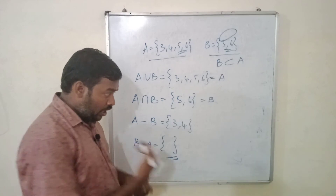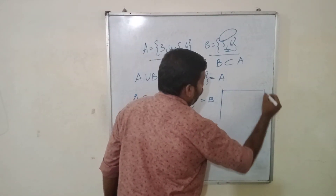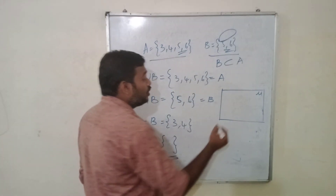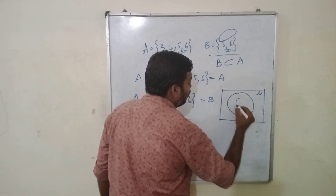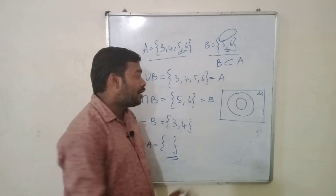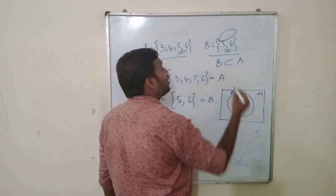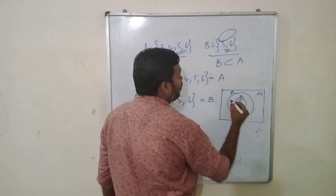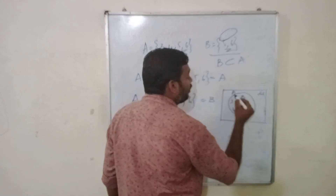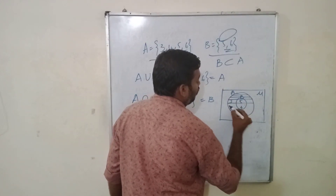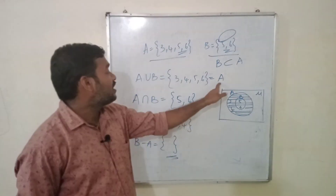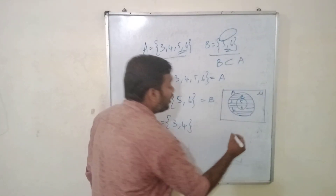Now if we go for Venn diagrams, start with the universal set. As I already told you, if it is a subset, you need to draw one set inside the other — the bigger set is the larger circle and the smaller set is the smaller circle inside it. Here A is the bigger set and B is the smaller set: B has 5, 6 and A has 3, 4 and 5, 6. For A union B, I am shading all of A — that is why A union B is A.